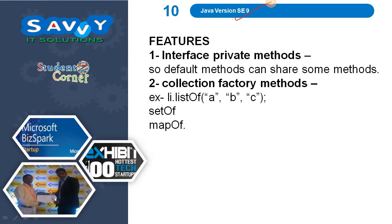Java 9 introduced Interface private methods, so default methods can share some private methods. Also introduced Collection factory methods: List.of(), Set.of(), and Map.of().